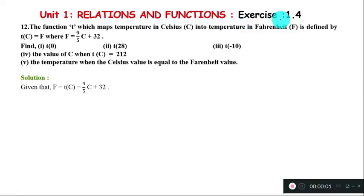This is question 1.4. The function T which maps temperature in Celsius into temperature in Fahrenheit is defined by T(C) = F, where F = 9/5 C + 32. The formula converts Celsius to Fahrenheit.